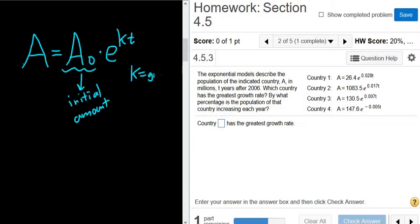k is the growth rate. If k is positive, it's growth. If k is negative, it's decay. In this problem, we have population. So populations generally increase, so it's a growth rate. So we want the greatest growth rate. So that's k.